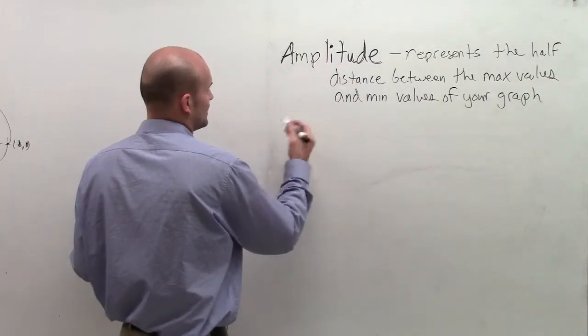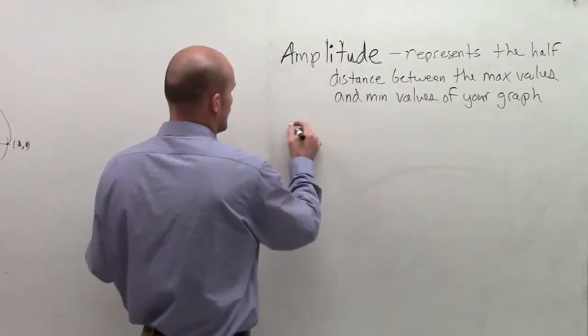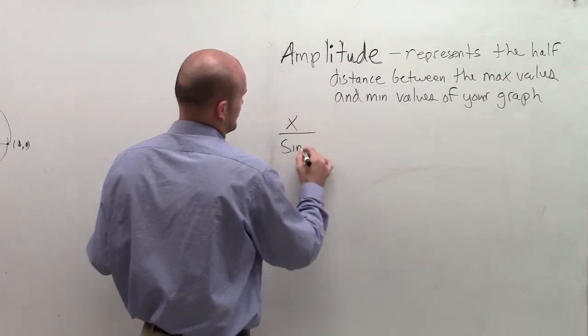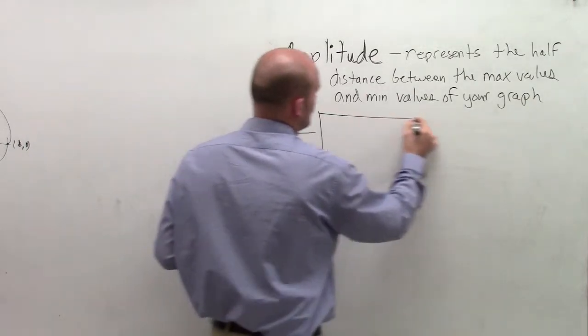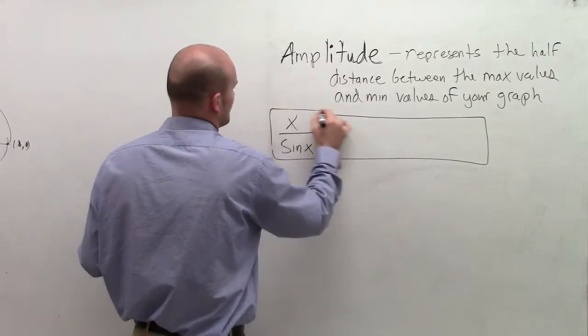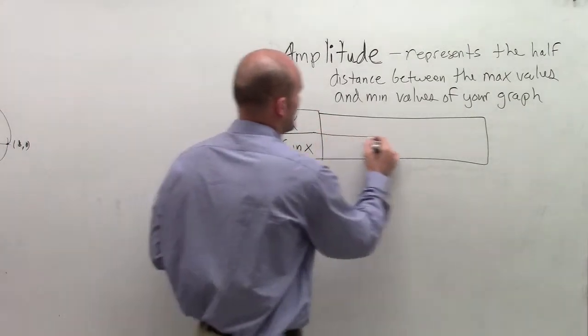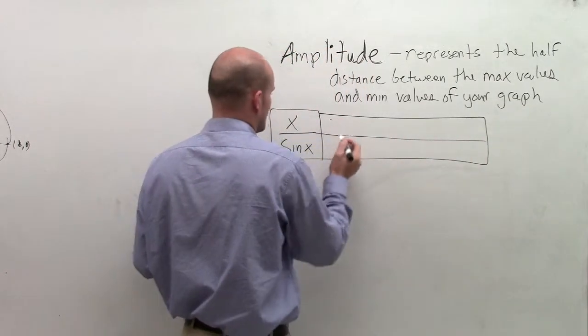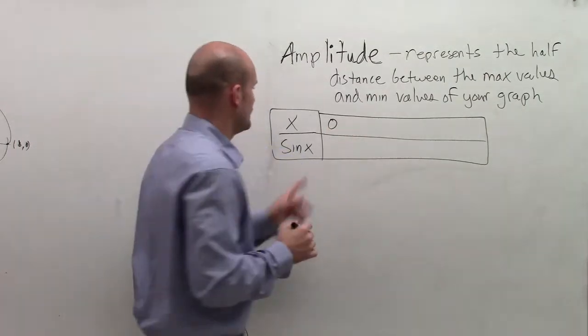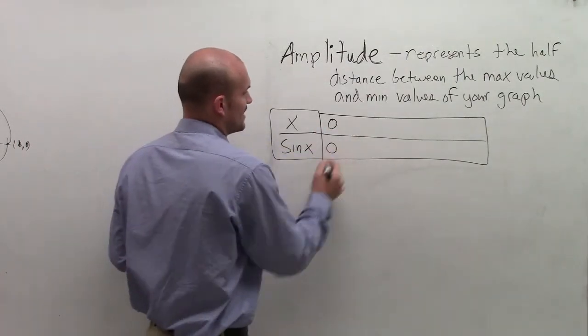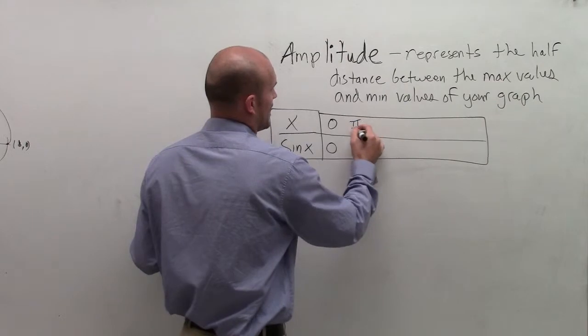So let's take a look at, let's make a table of x and sine of x. And so far, we've dealt with the same type of functions or the same values. The first one we always dealt with is 0. And we knew that when x equals 0, sine of x equals 0.